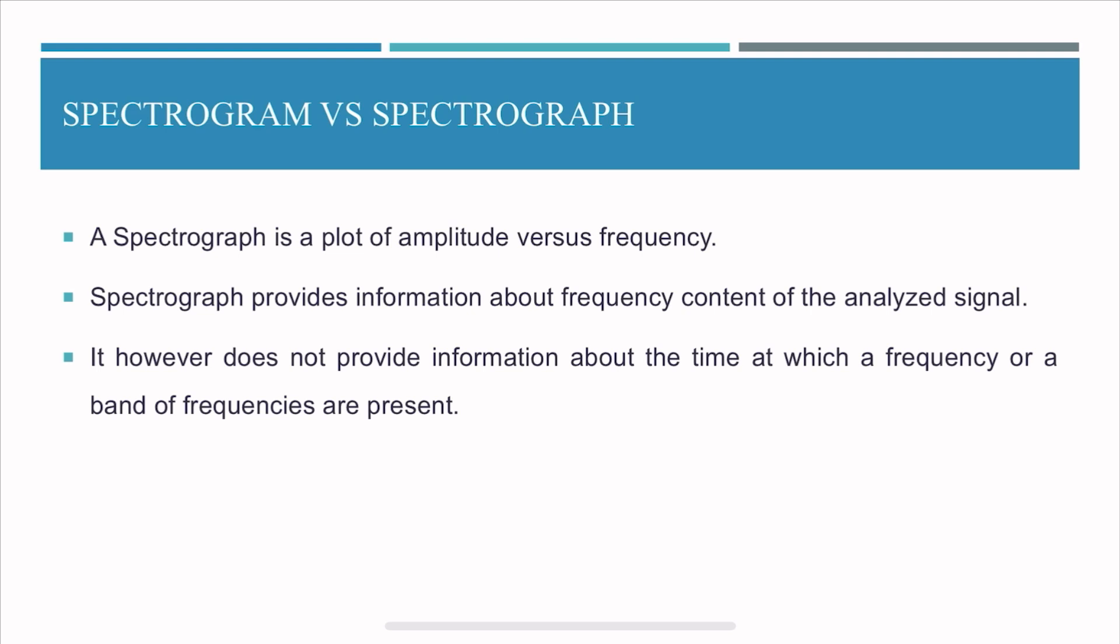So spectrograph has a limitation because it can only give you information in 2D. It can't say at what instances of time was a frequency present or absent. So that's where the spectrogram takes precedence. It has more use.